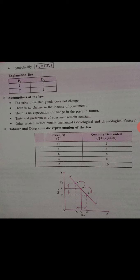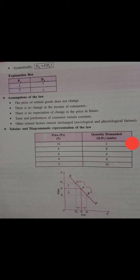Now the tabular and diagrammatic representation. If price is Rs. 10, quantity demanded is 2 units. As price falls to Rs. 8, quantity demanded increases to 4 units. At price Rs. 6, quantity demanded rises to 6 units. As price keeps decreasing, demand keeps increasing. When price comes down to Rs. 2, quantity demanded becomes 10 units. In the diagram, on the X-axis we take quantity demanded of good X, and on the Y-axis we take price of the commodity X.